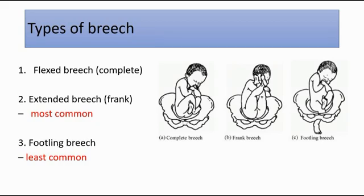The third and least common type of breech is the footling breech, where the hips and knees are extended and the presenting part is the feet. As seen in the picture, the feet are the presenting part, and this type is more commonly associated with cord prolapse as a complication.